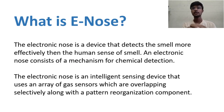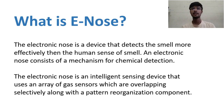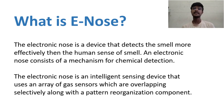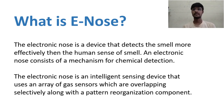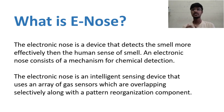The electronic nose is a device that is similar to the human nose — it detects smell more efficiently than the human sense of smell. It basically consists of different sensors used to detect smell, similar to what the human nose does. It is an intelligent sensing device that uses an array of gas sensors with overlapping selectivity, along with a pattern recognition component, in order to detect odor.